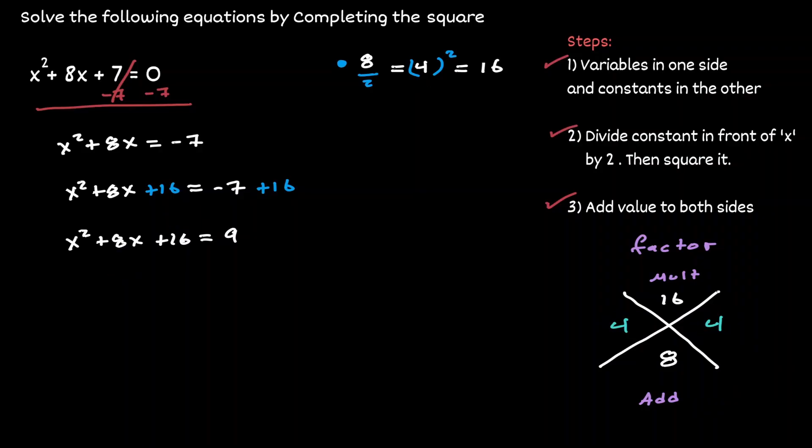Now we can write the left hand side of our equation in factored form as x plus 4 times x plus 4. And the right hand side, let's bring it down. But now notice that when you have the same expression and you multiply it by itself, that's the same as just raising it to the second exponent. So we can write this down as (x + 4)².